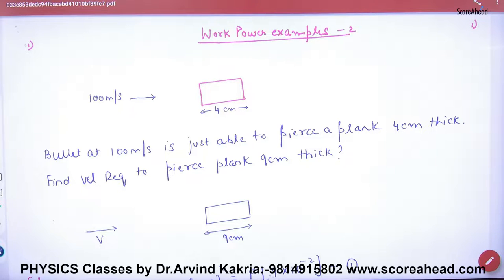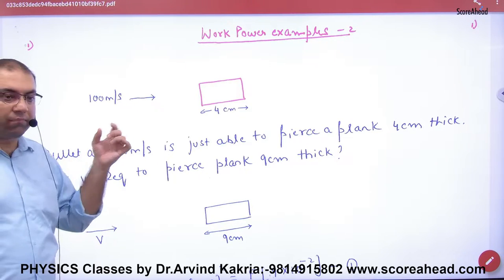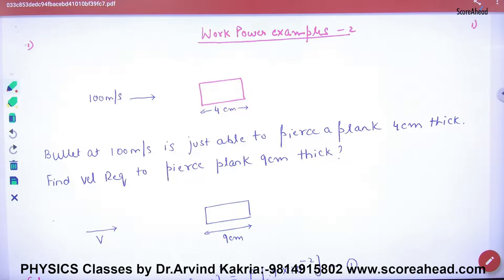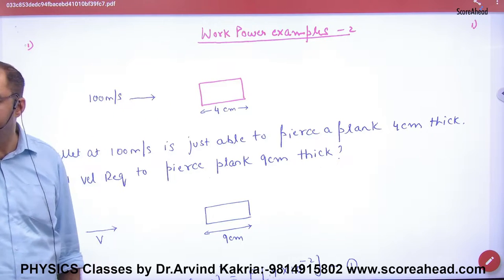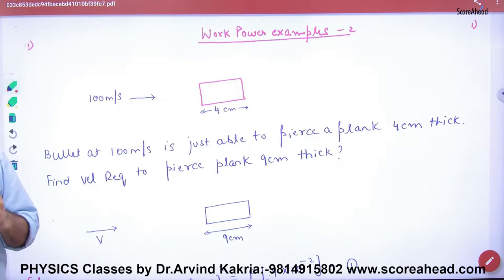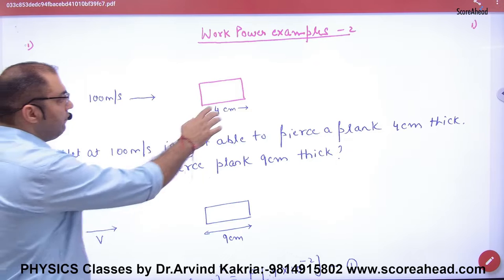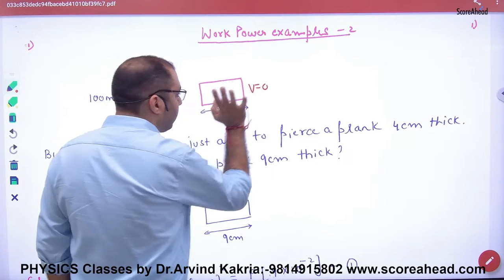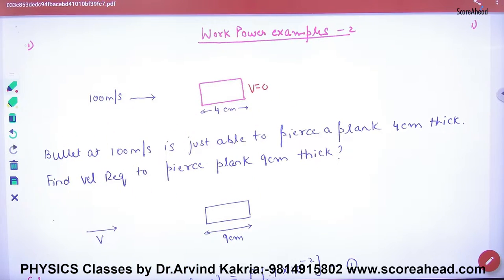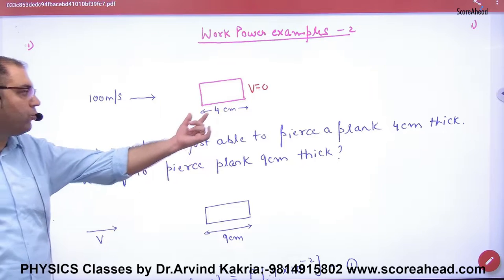Question is: one bullet at 100 meters per second enters this plank. The plank will stop it, so what will the final velocity here? Zero. And how many centimeters in the plank? 4 centimeters.